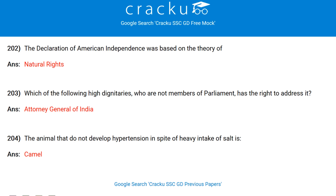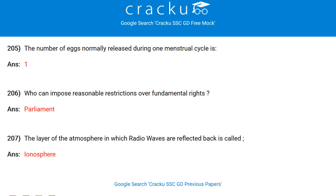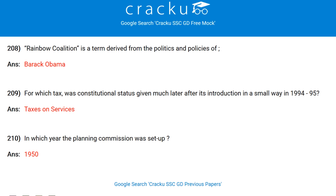The first Sultan who requested and obtained letters of investiture from the Khalifa was Iltutmish. The Declaration of American Independence was based on the theory of natural rights. Which of the following high dignitaries, who are not members of parliament, has the right to address it? The Attorney General of India. The animal that does not develop hypertension in spite of heavy intake of salt is the camel. The number of eggs normally released during one menstrual cycle is one.